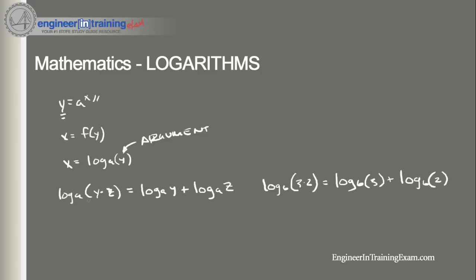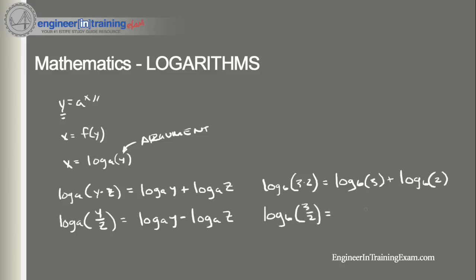Now when an argument of a logarithm is a quotient of two numbers, say log base a of y divided by z, this can be rewritten as the difference of the two logarithms: log base a of y minus log base a of z. Using the same numbers as before, say we are given log base 6 of 3 divided by 2. This is equivalent to log base 6 of 3 minus log base 6 of 2.